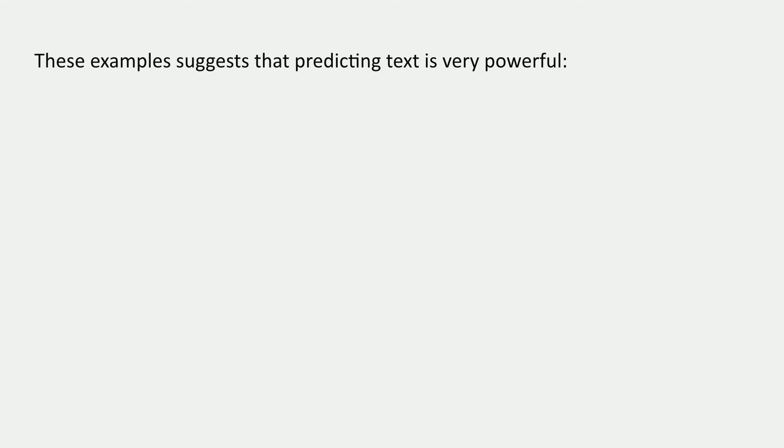I think what these examples illustrate is that predicting text is something very powerful. We can ask a system that can predict text questions, right? What started the American Revolution? And now the answer here, we can think about what the next word is going to be. Maybe it's 'the,' and then, but we can keep going, right? We can generate more words, and that's going to ideally give us an answer to this question.